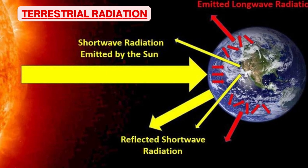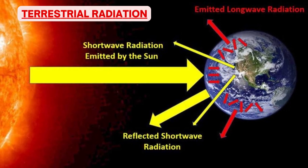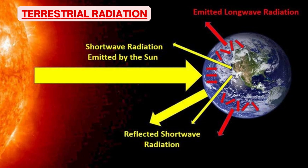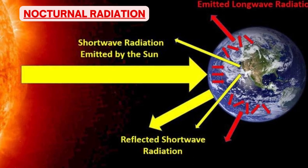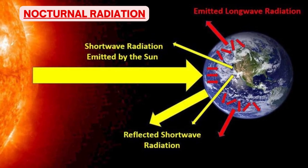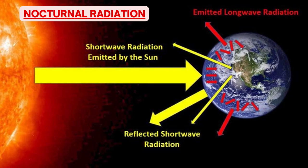Once earth gets heated by solar energy or solar insolation, it transmits the heat energy to the atmosphere in the form of long wave radiation. The long wavelength is due to the lesser temperature of the earth surface. Heating of atmosphere from earth's long wave radiation is called terrestrial radiation. The cooling of earth surface by long wave radiation at night is called nocturnal radiation.